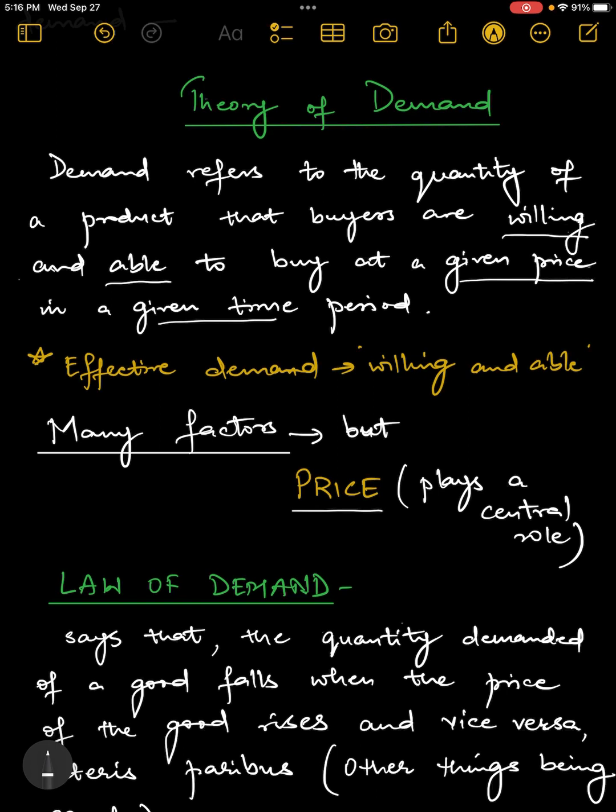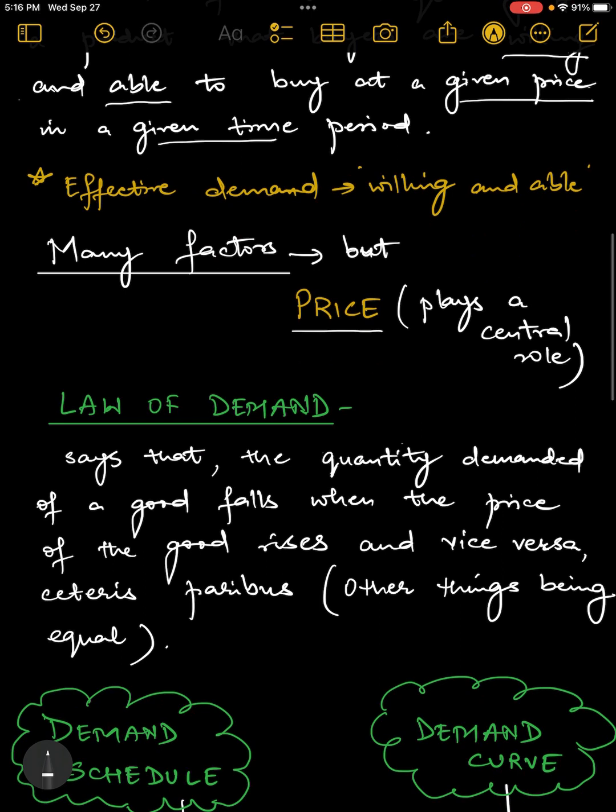And in fact, it is so common that economists call it the law of demand. So what does law of demand mean? Law of demand says that the quantity demanded of a good falls when the price of the good rises and vice versa, ceteris paribus.